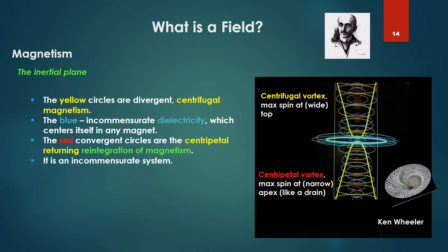Looking at it another way: the yellow circles are divergent, centrifugal magnetism. The max spin is at the top at the widest point, like a tornado. The blue is the incommensurate dielectricity, which centers itself into any magnet and occupies the same space — though we're talking two different spaces. The red convergent circles are the centripetal returning reintegration of magnetism, whose max spin is at the narrow top near the dielectric plane, like an inverse drain. We've got a picture of a circling centering vortex like a drain, and then we invert it. This is an incommensurate system.